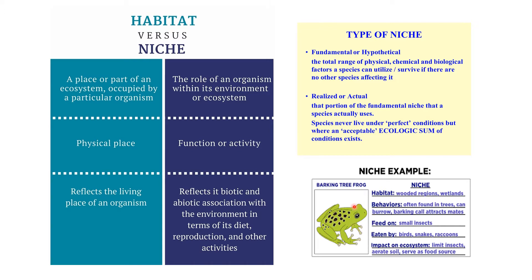For example, take a frog: its habitat is in the woodland region and wetlands. Its behavior includes being found in trees and burrowing. It feeds on small insects, is eaten by birds, snakes and raccoons. Its impact on the ecosystem is that it limits insects, aerates the soil and serves as a food source. This behavior — what it feeds on, what eats it, and its impact on the environment — constitutes its niche, while habitat is simply where it lives.